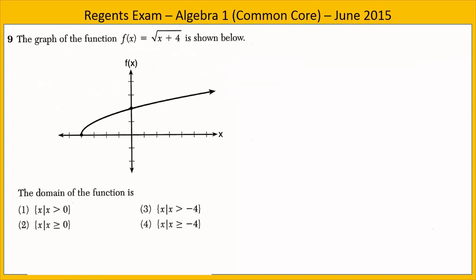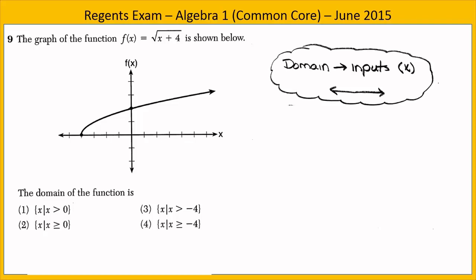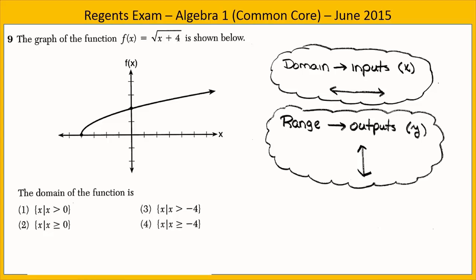In Exercise 9, we are given the graph of a function — a square root function — and we are asked to determine the correct domain. Domain refers to the x values, the inputs, left to right. Range refers to the y values, the outputs, low to high. In this problem, we are interested in the domain.